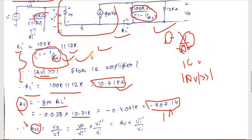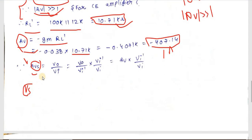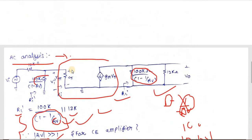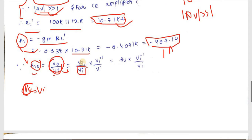Now for the overall voltage gain Avs = Vo/Vi. We express this as (Vo/Vi') × (Vi'/Vi), where Vi' is the internal voltage. The overall gain = Av × (Vi'/Vi). We don't yet have Vi'/Vi, so we apply the voltage divider rule using the virtual input resistance Ri'.